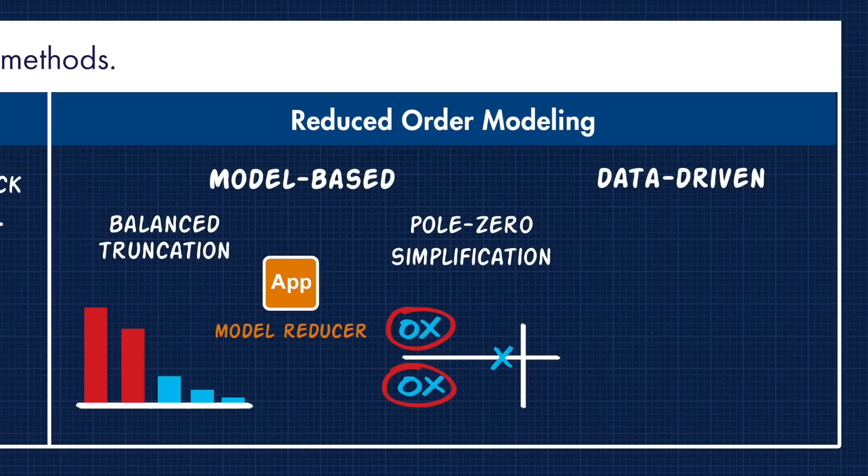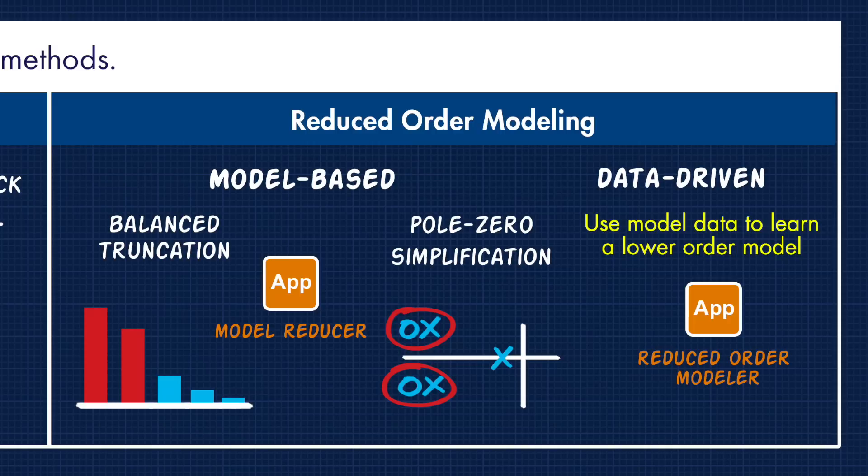Or you may want to take a more data-driven approach, where you use data from your high order model to learn or identify a lower order model, just like you would do with system identification. And the reduced order model app makes this process really easy.